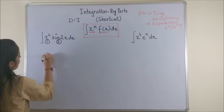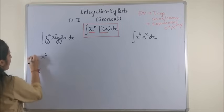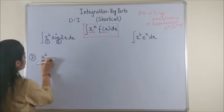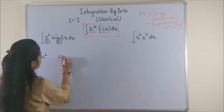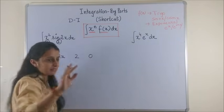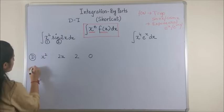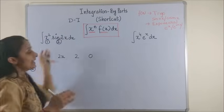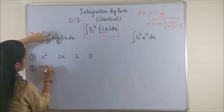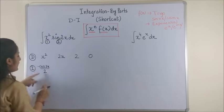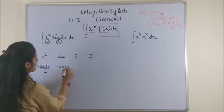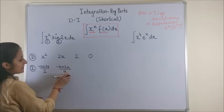Now copy x squared as it is and keep differentiating it until you get a zero. So derivative of x squared is 2x, derivative of 2x is 2, and then derivative of 2 is zero. So we stop. For the next function which is trigonometric function, you integrate. So integral of sine 2x is minus cos 2x by 2. Now integrate this one more time. So this would be minus sine 2x by 2 into 2, that will make it 4.